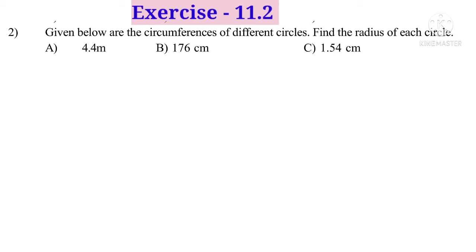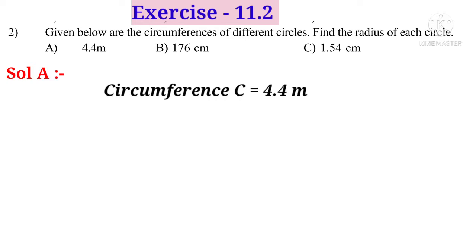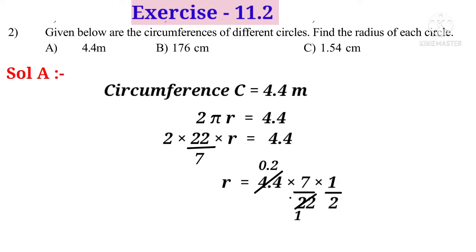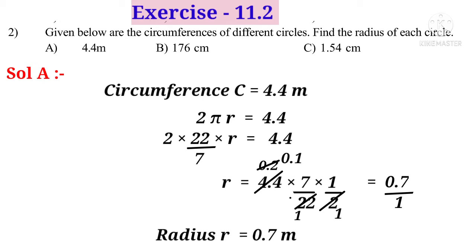Second problem: Given the circumferences of different circles, find the radius of each circle. Solution (a): Circumference C equals 4.4 metres. Since C equals 2πr, we have 2 × (22/7) × r equals 4.4. Solving for r: r equals 4.4 × (7/22) × (1/2). On simplification, 22 cancels and 2 cancels, giving r equals 0.1 × 7 equals 0.7 metres.